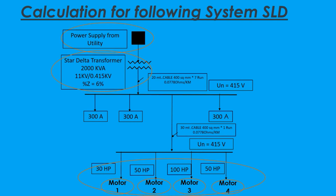We'll calculate fault current for these points: point number one, point number two, and point number three.